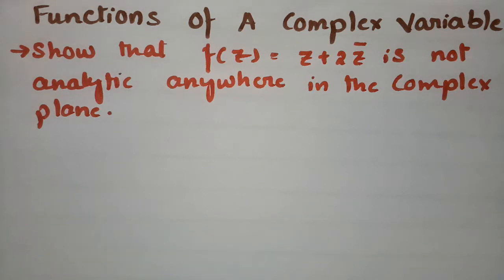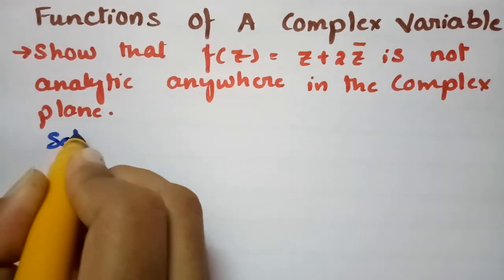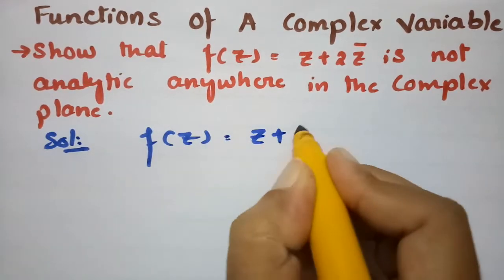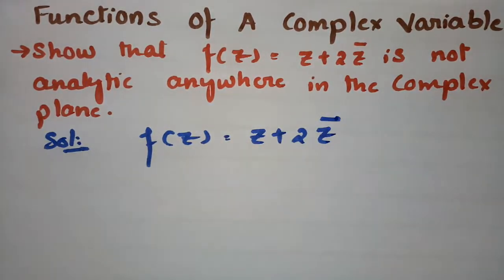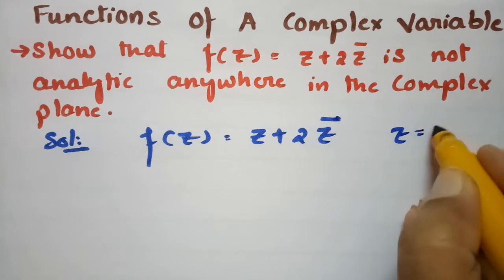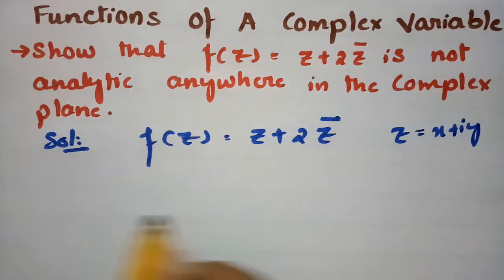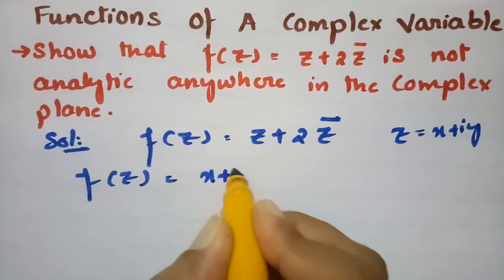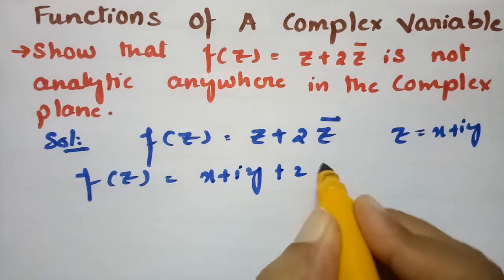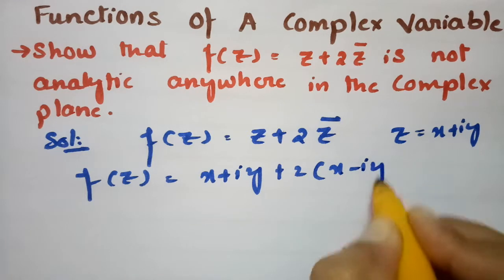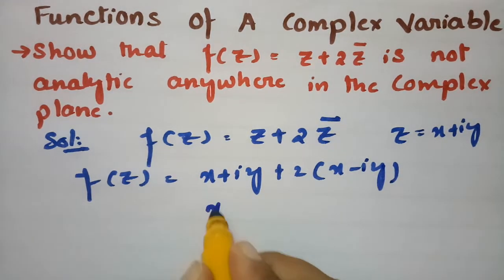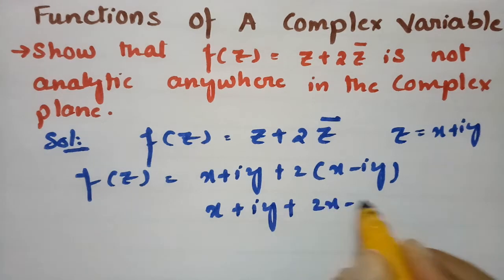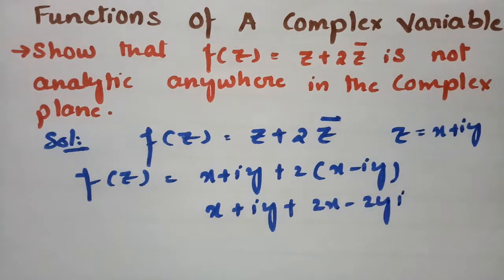What is given in the question? f(z) is given as z + 2z̄. As you know that z = x + iy, this can be written as f(z) = (x + iy) + 2(x − iy), which gives us x + iy + 2x − 2iy.